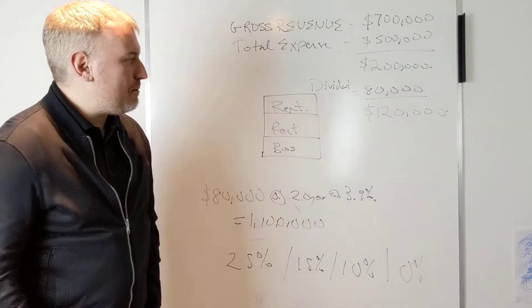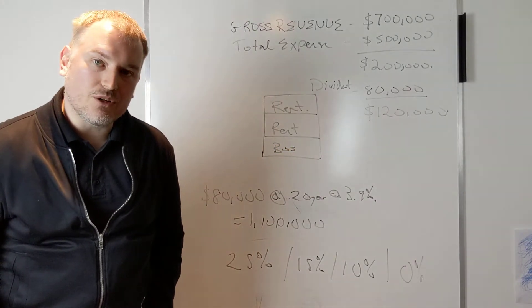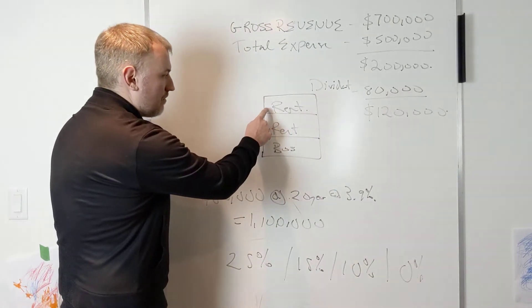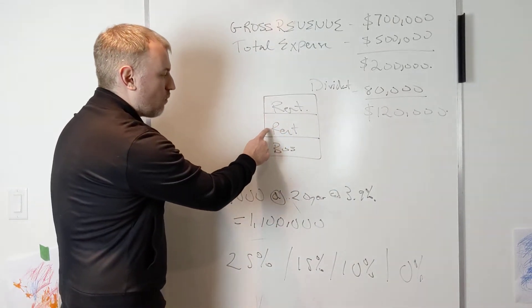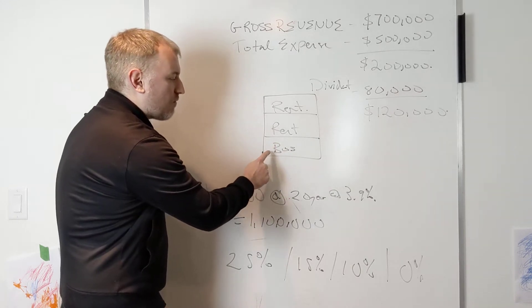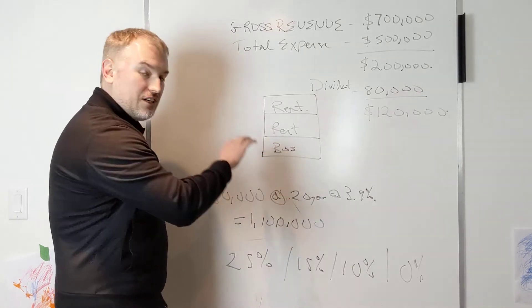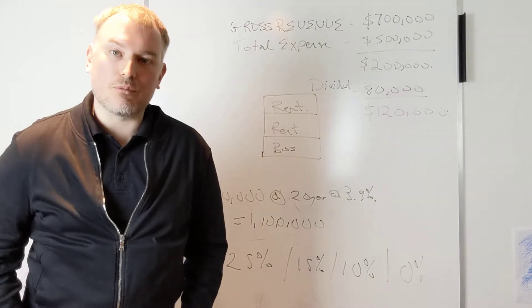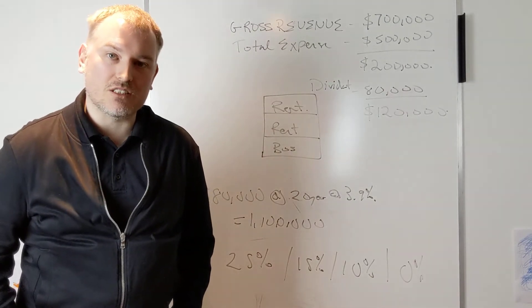So what's going to happen is the bank in terms of qualifying is going to take the rent from this floor, the rent from this floor, plus the corporate financials or the net income from the business. And they're going to use that as the overall number to calculate the maximum mortgage they're going to qualify for.